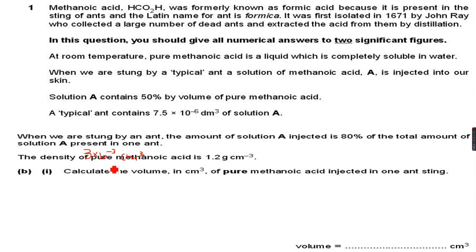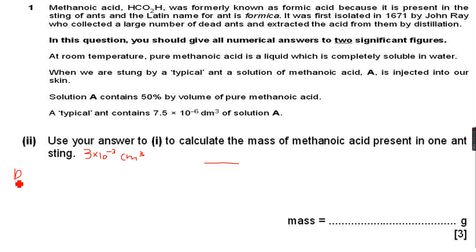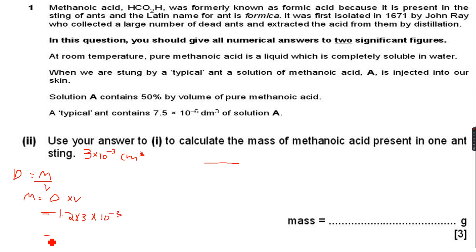We know that the density of pure methanoic acid is 1.2 grams per centimeter cube. Density equals mass divided by volume, so mass equals density times volume: 1.2 × 3×10⁻³ = 3.6×10⁻³ grams. That is the mass of methanoic acid injected into us.